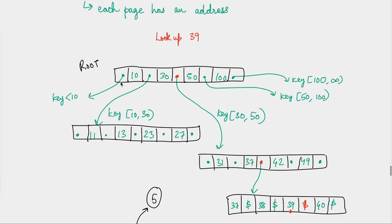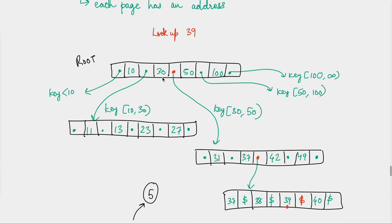Besides every key there are two pointers pointing to other pages. The pointer before 10 points to a page with all keys less than 10. The next pointer after 10 points to a page with keys in the range greater than or equal to 10 but less than 30, which is the next key. In this fashion you have distribution of keys across different pages, with references stored beside every key.